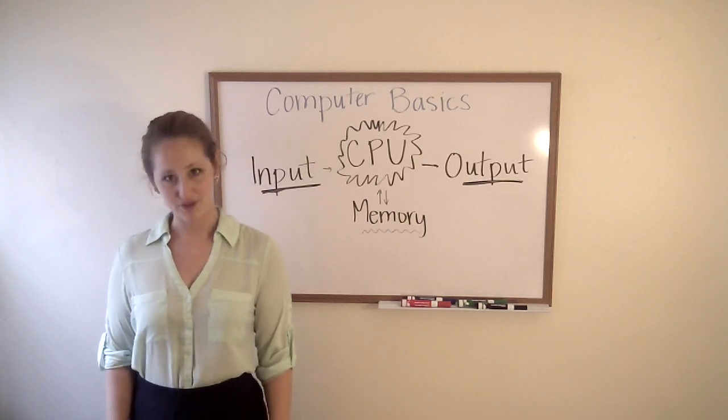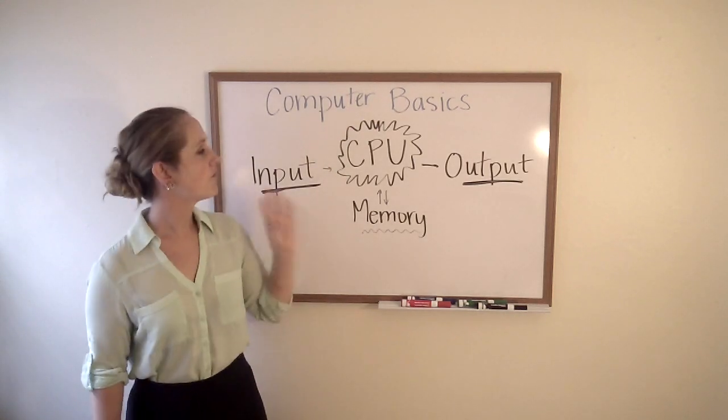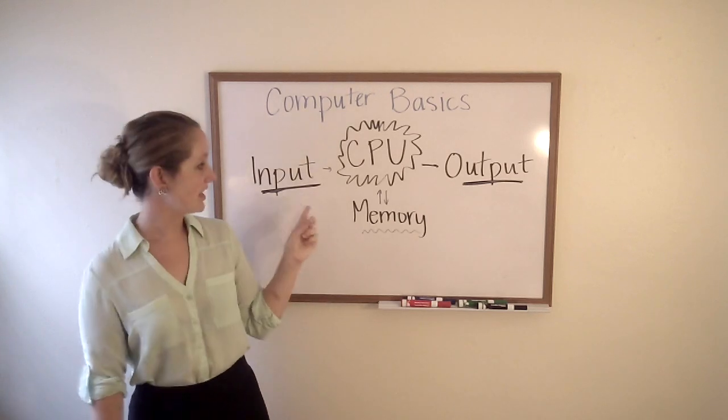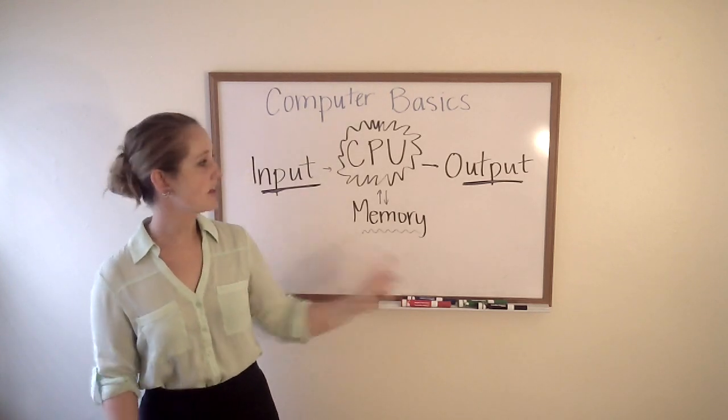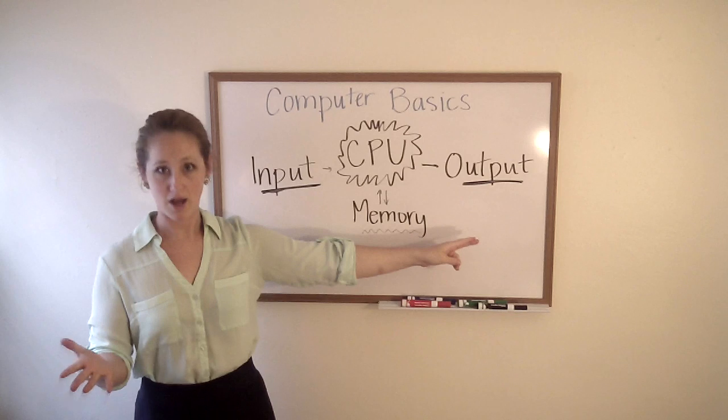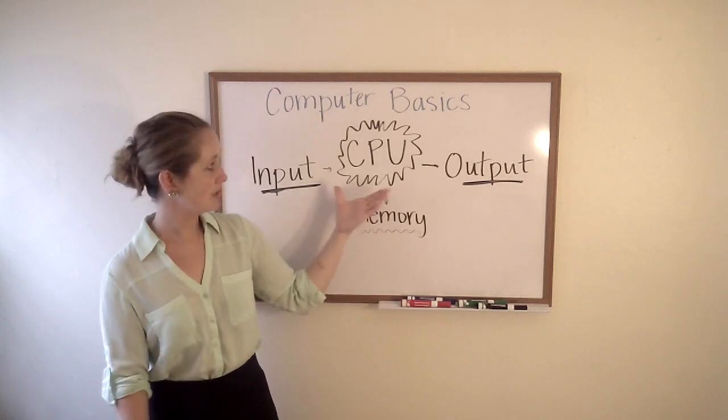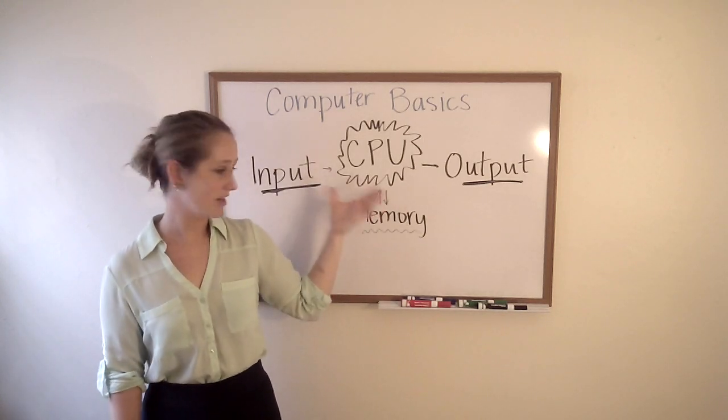Hi, I'm Brianna from FreeCodeCamp. Let's do a quick review. The four basic parts of a computer are the input, like the mouse or the keyboard, the output, what you're seeing on the monitor or hearing through the speakers, the CPU, the central processing unit, and the memory.